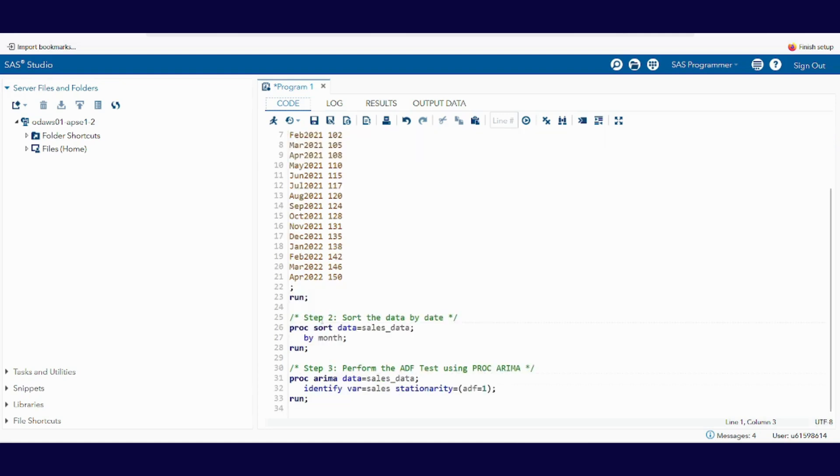Our second step is to sort the data by date. So proc sort, data equals sales_data, by month. We sorted our data by month, then run. The third step is to perform the ADF test using proc arima. So proc arima, data equals sales_data. Then identify var equals sales, stationarity equals ADF. Then run. Let's run our dataset.